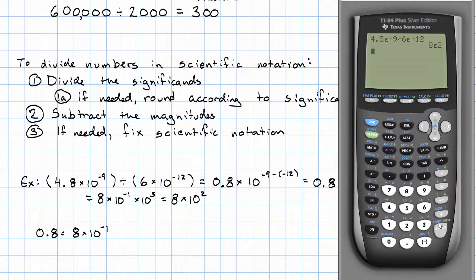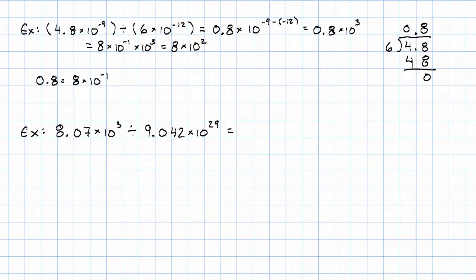Okay, let's see an example in which we really need to round. Let's say we have 8.07 times 10 to the third divided by 9.042 times 10 to the 29th.